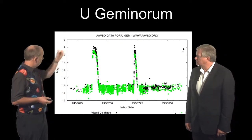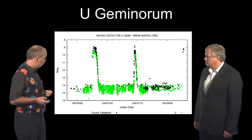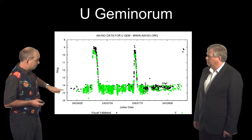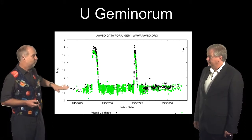If you plot brightness against time, here's some data from the amateur astronomers who monitor these things and do a fantastic job. What you can see is normally it's pretty faint but it's still there, you can see it when it's not exploding.